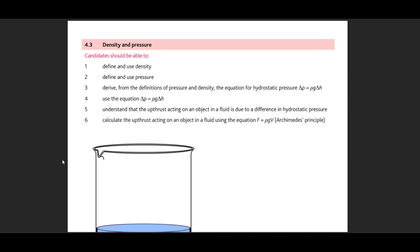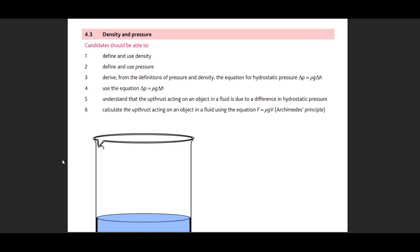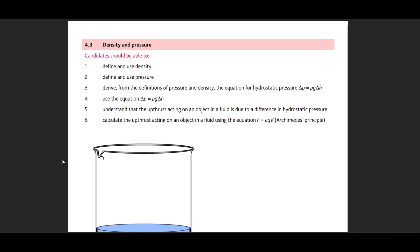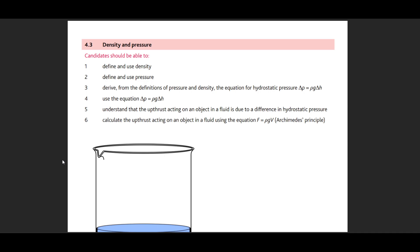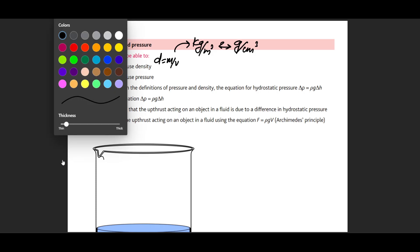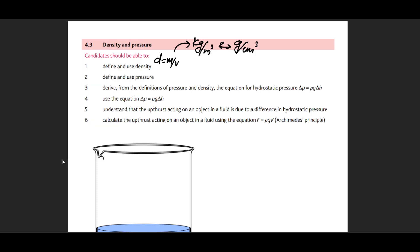Starting with this topic of density and pressure, most things carry over from O-levels, but new content will be added for A-levels. We need to understand that density equals mass over volume. There are two units in this syllabus: kg per meter cubed and grams per centimeter cubed. You should be able to convert between both of them.